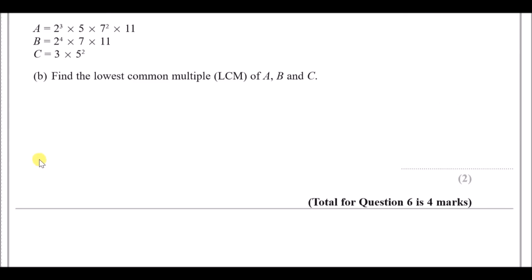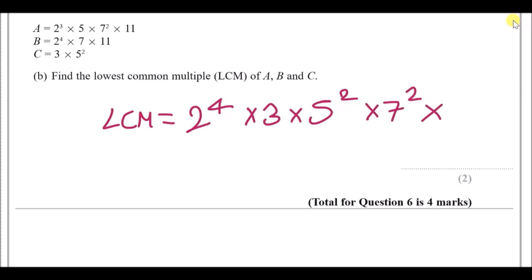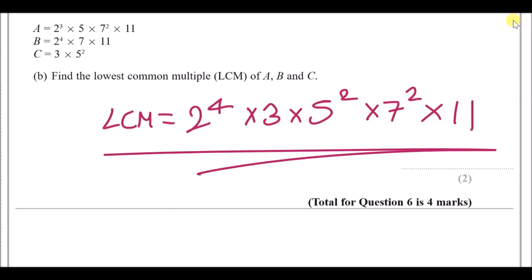Part b: find the LCM. For LCM, take the highest power of each prime across all numbers: 2⁴, 3¹, 5², 7², and 11¹. Multiply these together for the lowest common multiple.